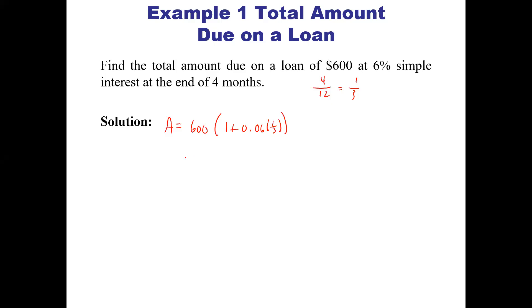That value is our future value, so A equals $612. That's the amount due on the loan at the end of four months at 6% simple interest.